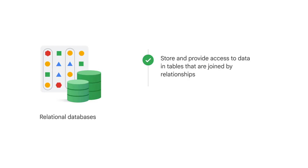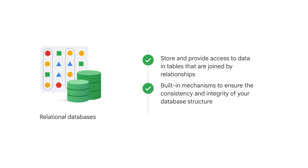The main difference between relational and non-relational databases is how data is stored and organized. Relational databases store and provide access to data in tables that are joined by relationships. This includes built-in mechanisms to ensure the consistency and integrity of your database structure.